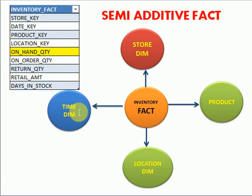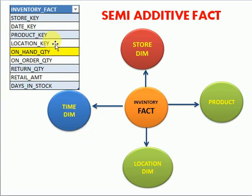If any fact can be aggregated across only some of these dimensions — for example, looking at this semi-additive fact: for the inventory fact table, the on-hand quantity cannot use the time dimension, because today the on-hand quantity is 20 and tomorrow it may also be 20. You can't take a measure for that. This type of quantity we call a semi-additive fact.